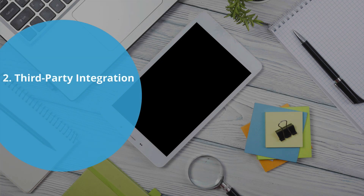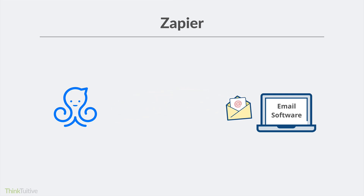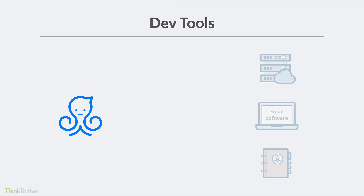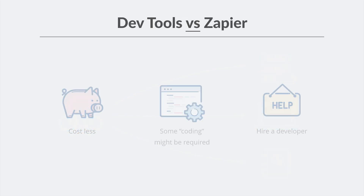Next is third-party integration. ManyChat has a built-in integration with Zapier. Zapier is basically a tool that allows one app to talk to another, letting you transfer data and automate tasks. For example, you can collect an email address using your Messenger Bot and feed this information directly into your email marketing software. ManyChat also has a feature called DevTools, which allows you to transfer data from ManyChat to an external database and other third-party tools such as your email marketing or CRM. Using DevTools costs a lot less than Zapier.